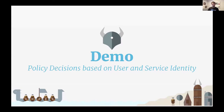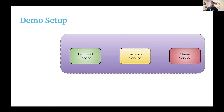Now we'll transition to the demo part of the talk, where we'll see how policy decisions are based on user and service identity. We have Acme Healthcare, which provides its members a platform to view invoices. This platform is composed of three services: the front-end service, which allows members to log in and see their invoices; an invoice service, which holds the actual invoices; and a claim service, which holds the claims that are part of the invoice.